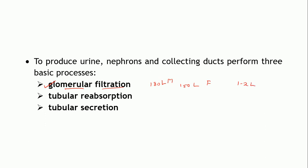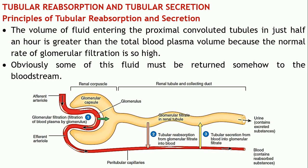Most of the filtrate must have returned back to the blood. Apart from that, there may be certain additions to the filtrate in the tubules. Filtration takes place in the renal corpuscle, the first part of the nephron. The second part — the renal tubules — is where the remaining two processes, tubular reabsorption and tubular secretion, take place. Today's video covers these two processes.